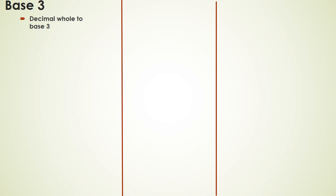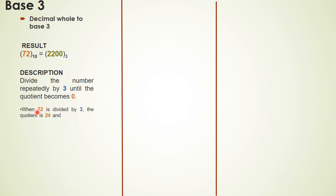For base 3, if I have a decimal whole number and I want to convert it into base 3, for example the number is 72 and I want to make it in base 3, I will use the method of repeated division. I will divide the number by 3 until the quotient becomes 0. For example, when 72 is divided by 3, I will get 24, remainder is 0. Then I will divide 24 by 3, I will get 8, remainder is 0. Then I will divide 8 by 3, the quotient is 2 and remainder is 2.